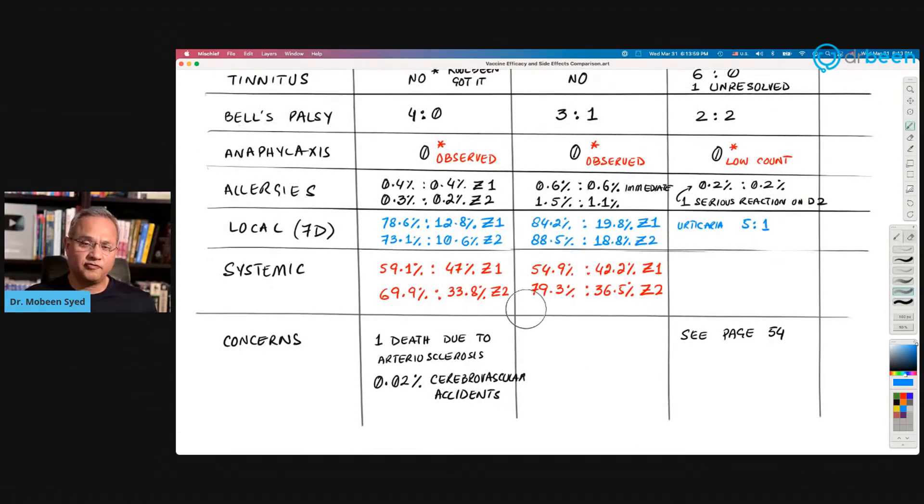Systemic reactions—for example, fever, myalgia, fatigue, and so on. So 59 percent in case of Pfizer, 54 percent in case of Moderna. These two lines, the first line is for dose one, second line is for dose two. Johnson and Johnson, because that was just dose one, they have not shown any. Both in case of Pfizer and Moderna, in the second dose, the systemic reaction becomes a little more aggravated.